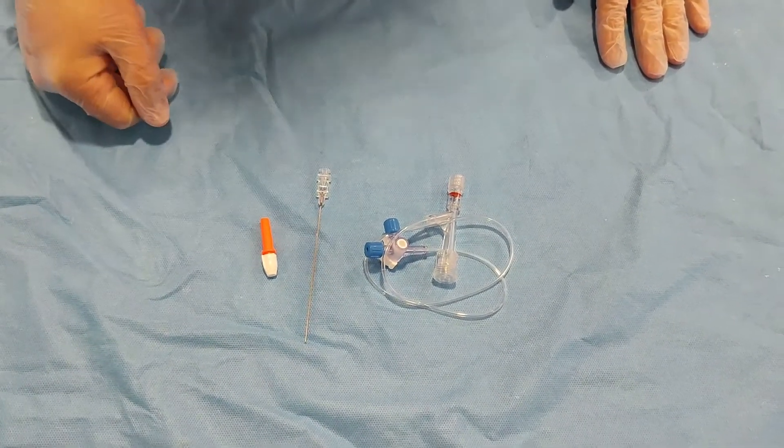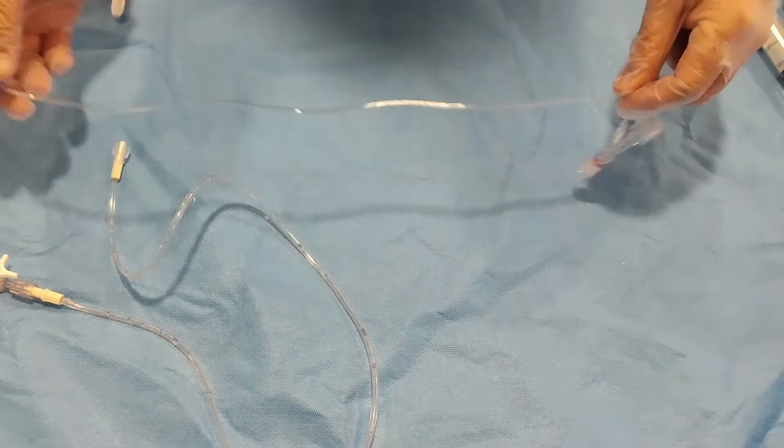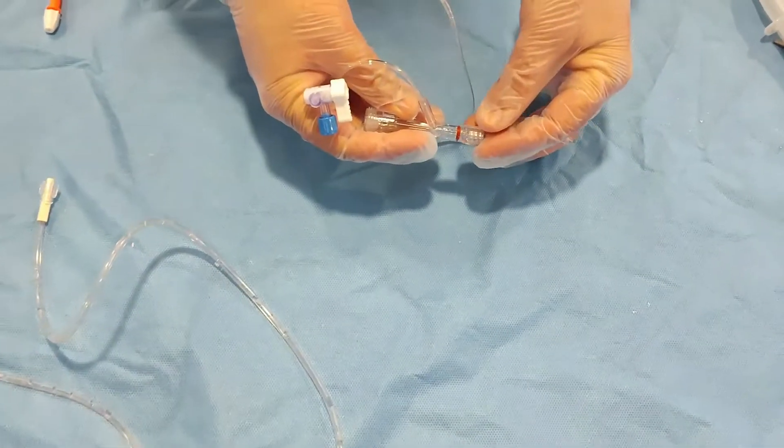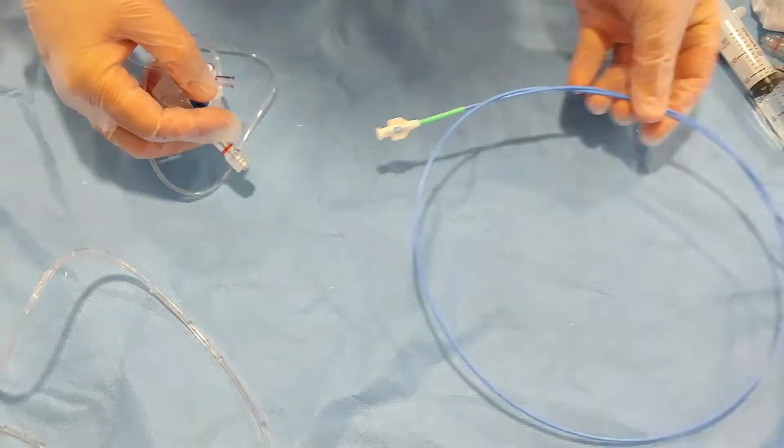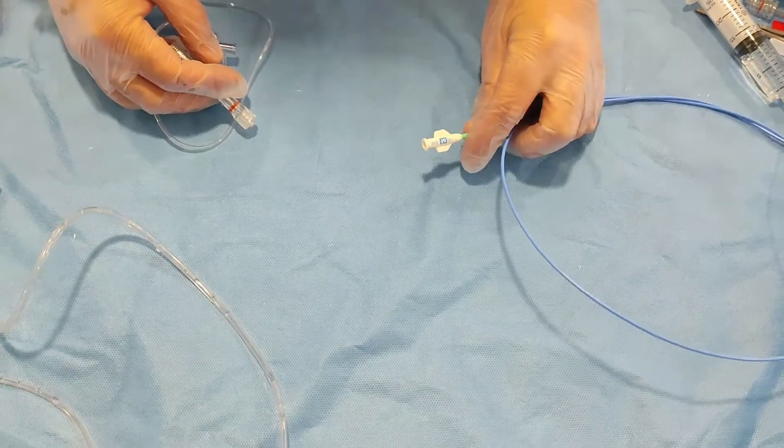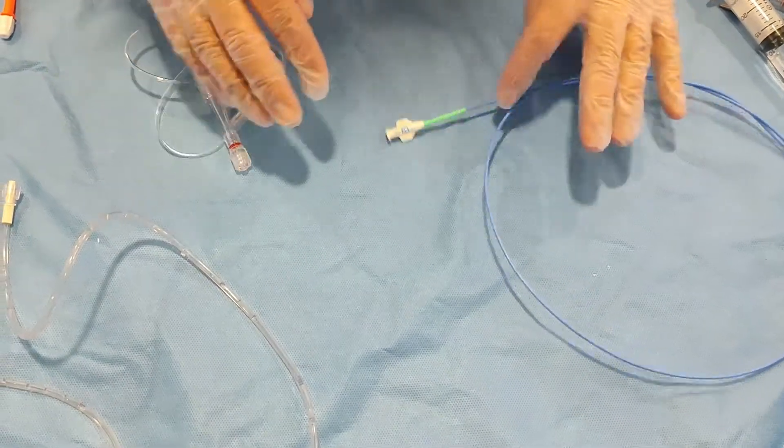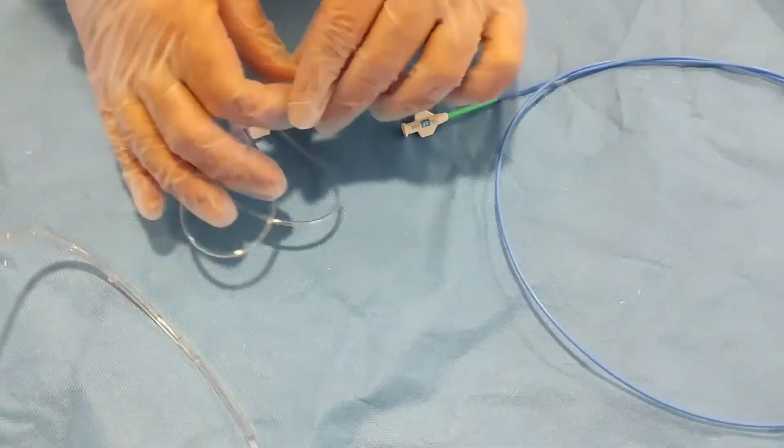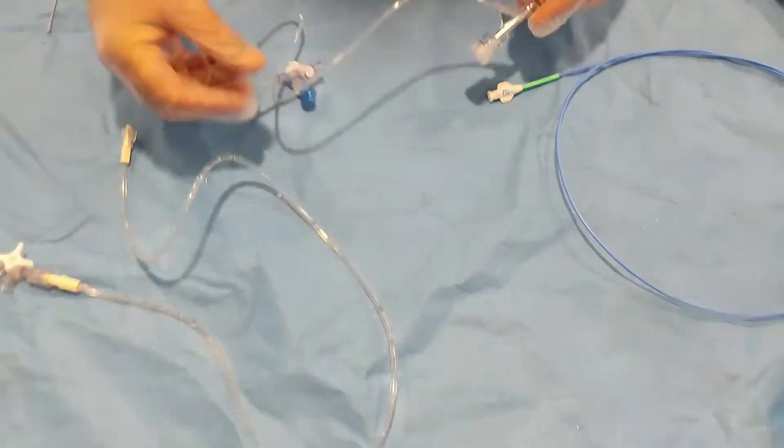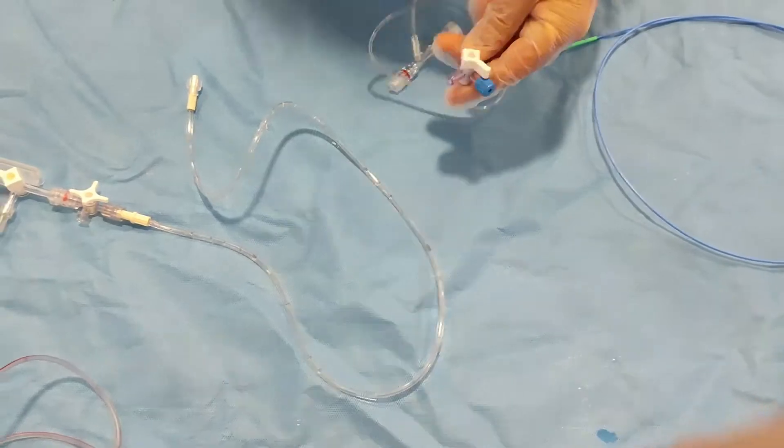Now I will show you how to use it, how to connect it. So make sure this is not connected to the patient. Assuming this catheter is a guiding catheter inside the patient, inside the sheath, and this tip is out. Do not connect it unless you make it ready.